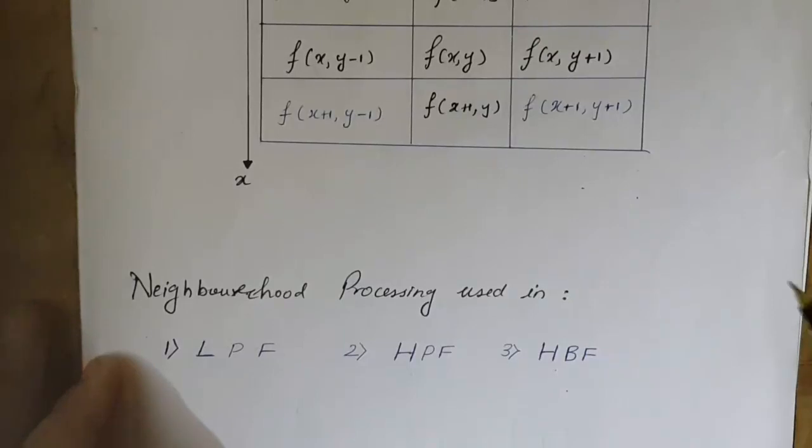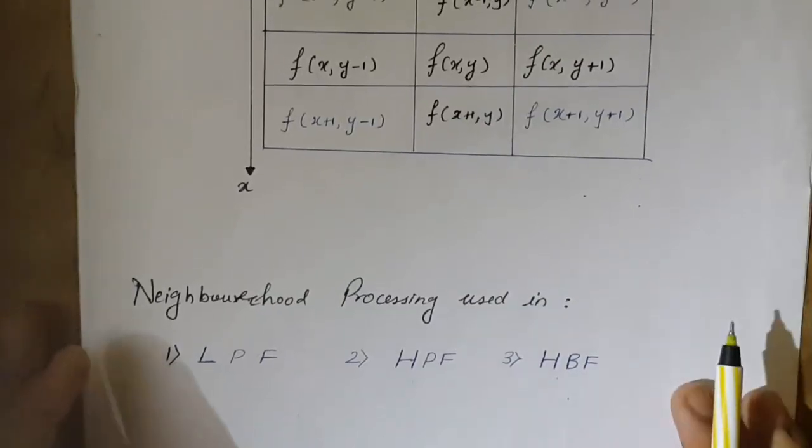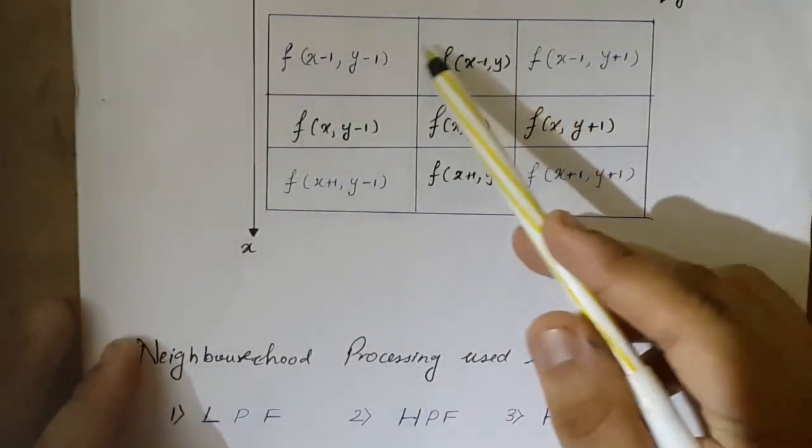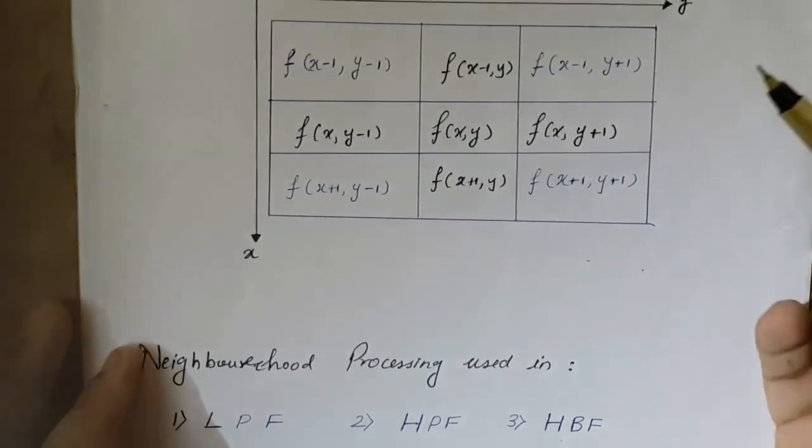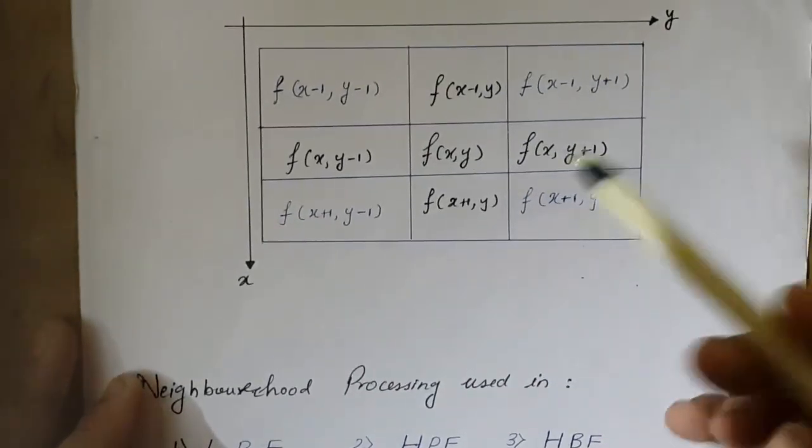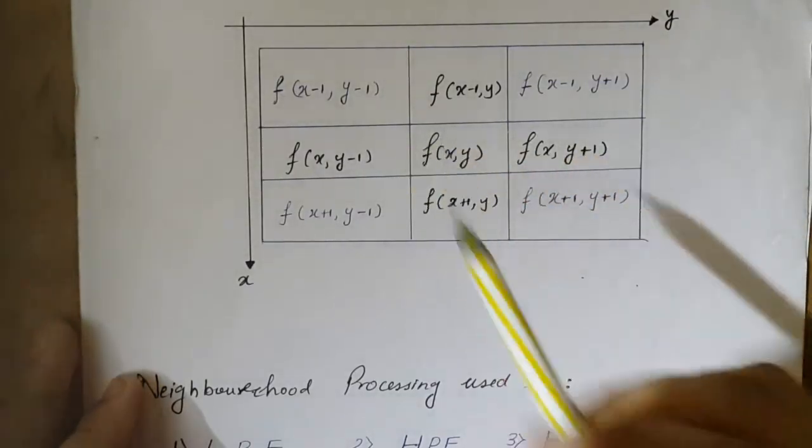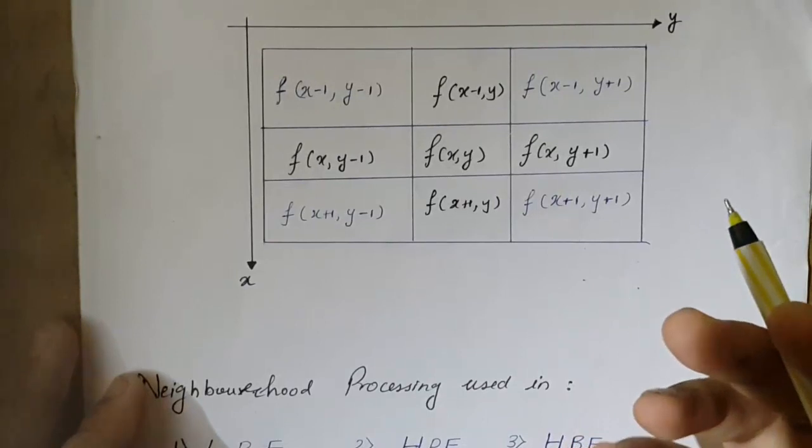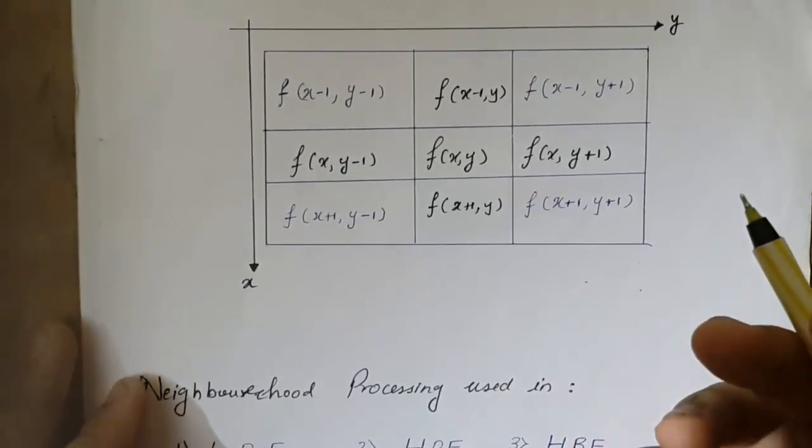Now how is this filtering done? There has to be some entity that makes changes in this pixel along with the neighborhood that surrounds it. In neighborhood processing, to do it simultaneously, we use a mask.